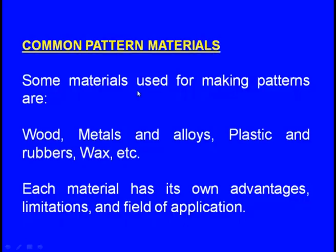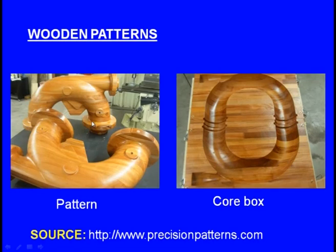These are the common pattern materials. Wood is the most widely used pattern material. Others include metals and alloys, plastic and rubber, and finally wax. Each material has its own advantages, limitations, and field of applications. Here we can see wooden patterns — this is a pump housing. This is the wooden pattern and this is the core box.